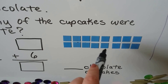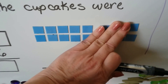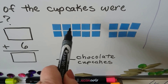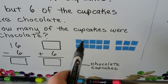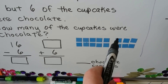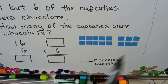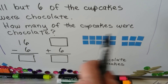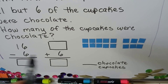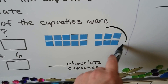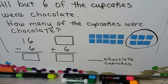We can use counters. Here we have ten counters and six counters — sixteen altogether. Out of sixteen counters, if we take away six, we're left with ten.